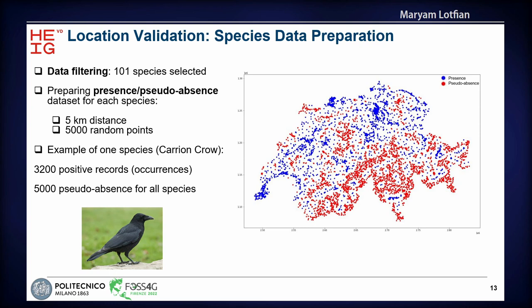The eBird observations are presence-only points — where the species is observed. For training our algorithms, we needed both presence and absence data, but obtaining true absences is complicated. That is why we generated artificial pseudo-absences. For each species dataset, we generated 5,000 pseudo-absences by randomly placing them at least five kilometers from the presence points. For instance, for the Carrion crow, or Corvus corone, which had around 3,000 presence points, we generated 5,000 random pseudo-absence points.